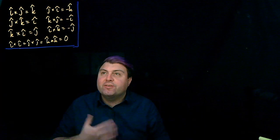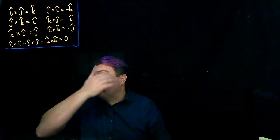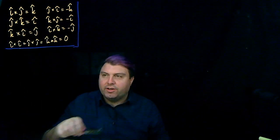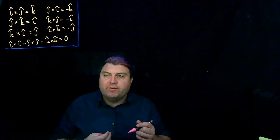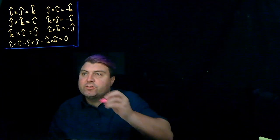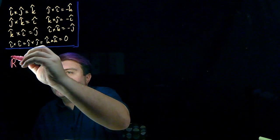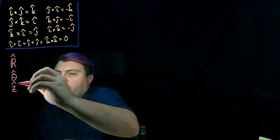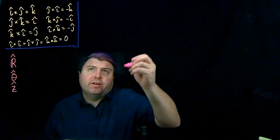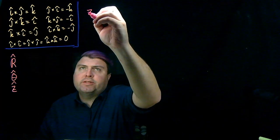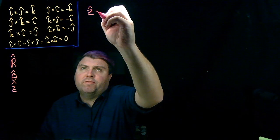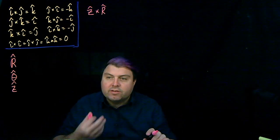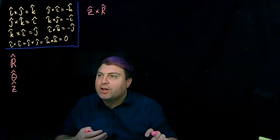In previous videos and classes, we found the cross product rules for Cartesian coordinates, but now that we're working in magnetic fields, we're finding that we oftentimes use R, T, Z components quite often. We might want to figure out, say, the cross product of Ẑ cross R̂, so that we can work in easier conditions.